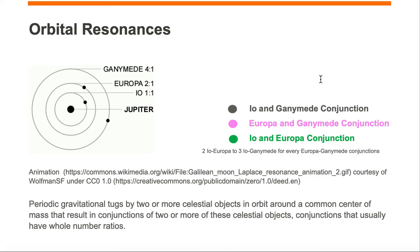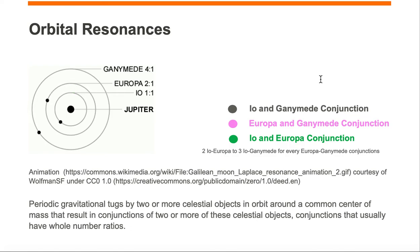In these Galilean orbits coming into conjunction, you'll see a repeating pattern: magenta, gray, green, gray, green — then it starts again: magenta, gray, green, gray, green, magenta, gray, green, gray, green, magenta. For every two Io-Europa conjunctions, you'll have three Io-Ganymede conjunctions for each Europa-Ganymede conjunction.